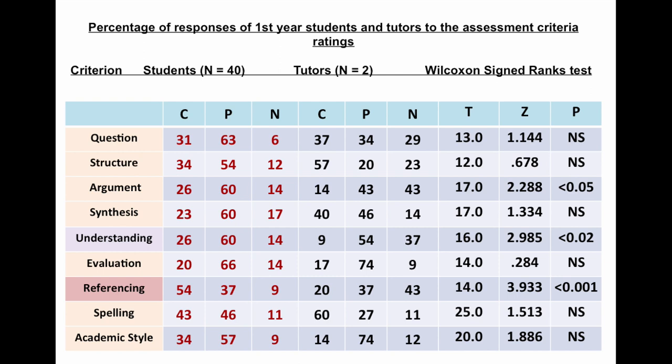You can find the difference between 54% for student self-evaluation and 20% from tutors evaluating students' work. For understanding, for example, 26% of students said they are completely confident, while tutors evaluated the same criteria at only 9%. The conclusion from using the Essay Feedback Checklist indicates there is a mismatch between what students expect and evaluate for their work and what tutors do in evaluating students' work.